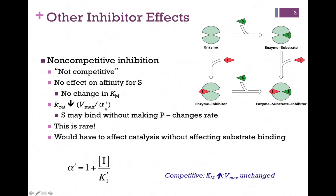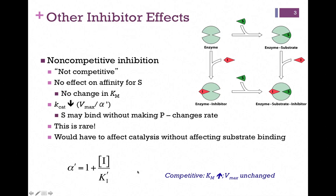Vmax is lowered by the factor alpha prime — which is directly proportional to inhibitor concentration and inversely proportional to Ki, a measure of the enzyme's affinity for the inhibitor. We call it alpha prime to indicate it's changing Vmax rather than Km. So in non-competitive inhibition, Km is unchanged and Vmax decreases — in many ways the opposite of competitive inhibition, where Km increased and Vmax was left unchanged.